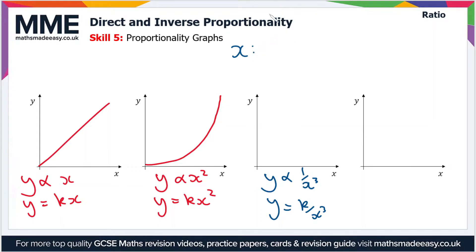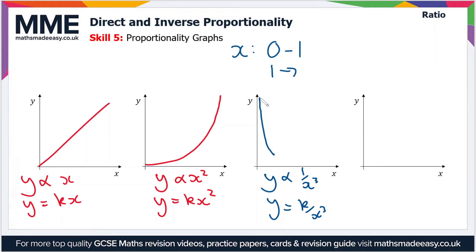A useful way to work it out is to consider values between 0 and 1 separately, then consider values beyond 1. Between 0 and 1 — like 0.5, 0.75 — as you cube these values they become increasingly smaller, so if you divide 1 by a very small number you get a very large number. So as you get closer to 0 on the x-axis, y gets much larger. Beyond 1, cubing a value greater than 1 makes it greater and greater, so 1 divided by a big number gives a very small number. You end up with a graph shaped like this, with a turning point that occurs roughly at x equals 1.